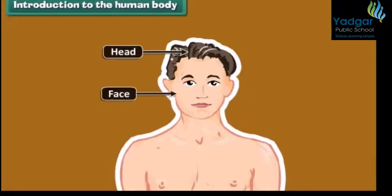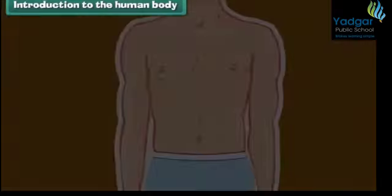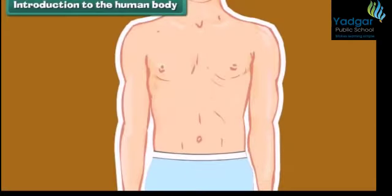Below the face is the neck, which joins the head to the rest of the body. It helps the head move towards right and left, and up and down. It is cylindrical in shape.